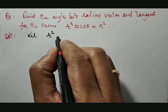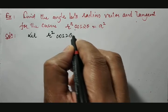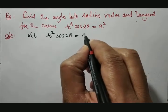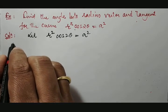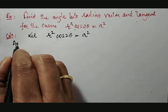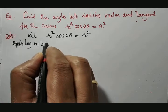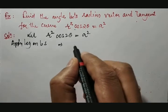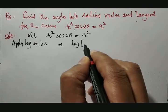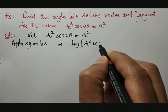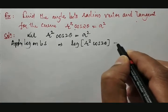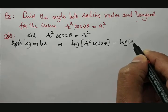Therefore, let us take r² cos 2θ = a². Apply log on both sides. If you apply log on both sides, it becomes log[r² cos 2θ] = log(a²).